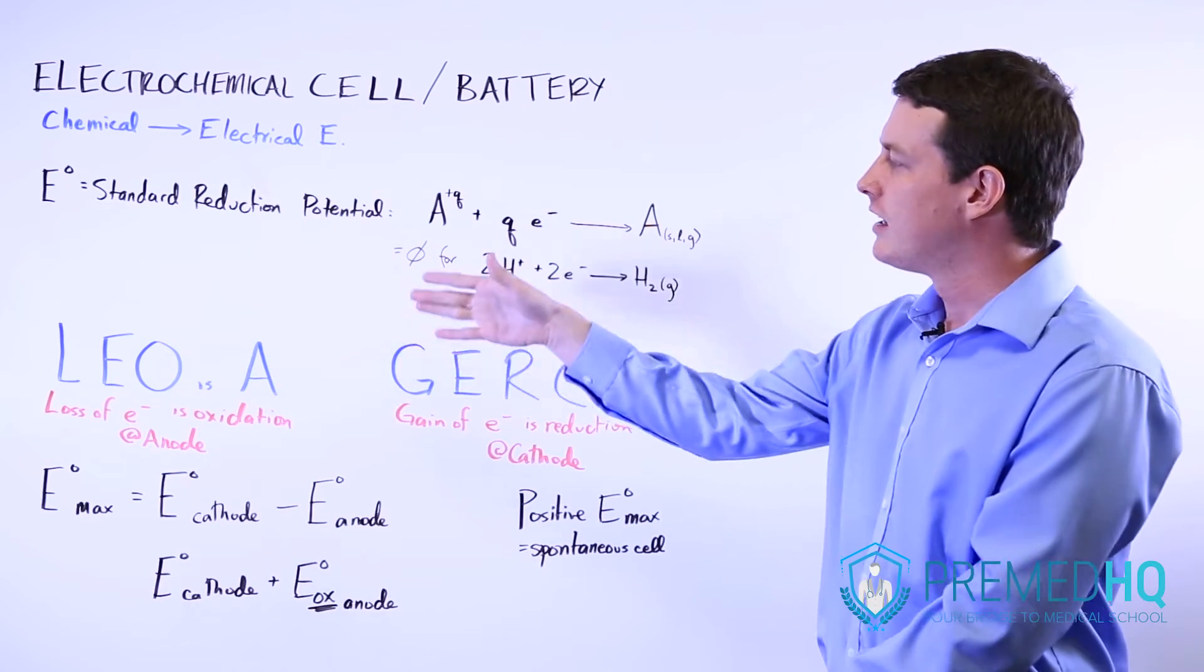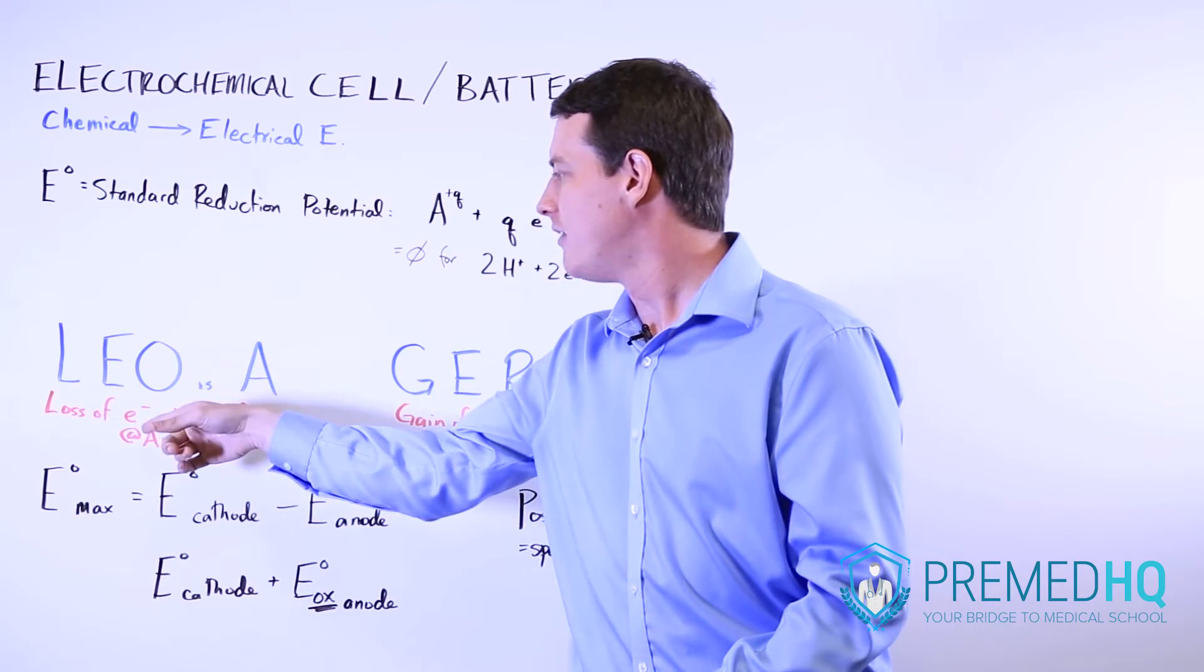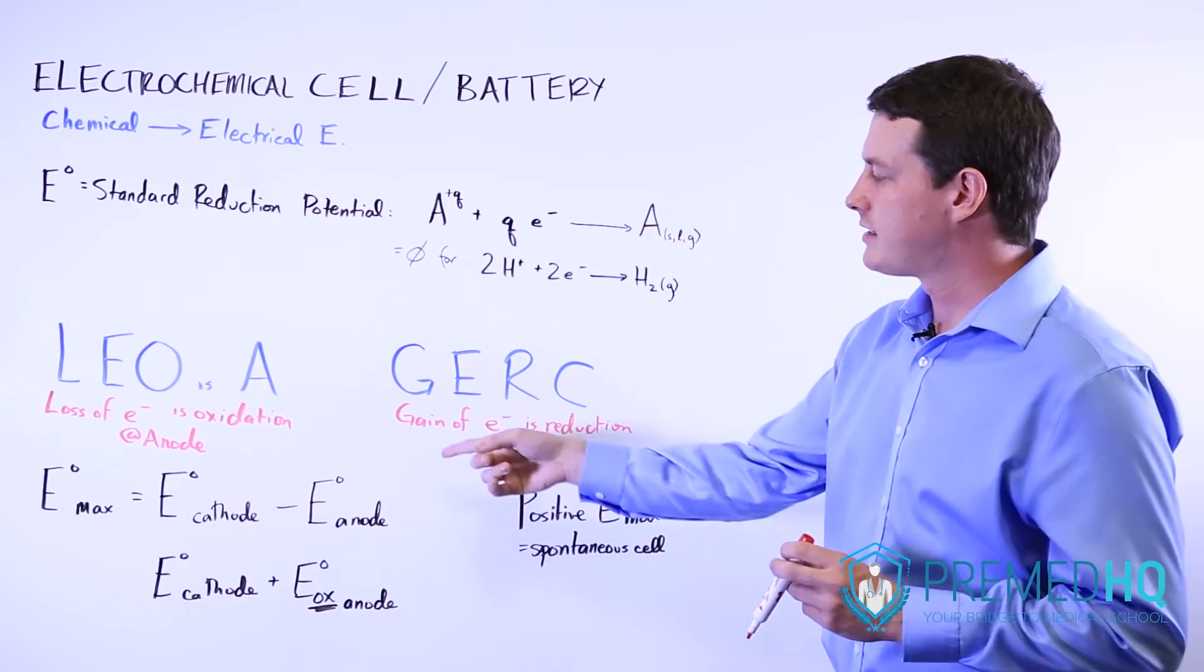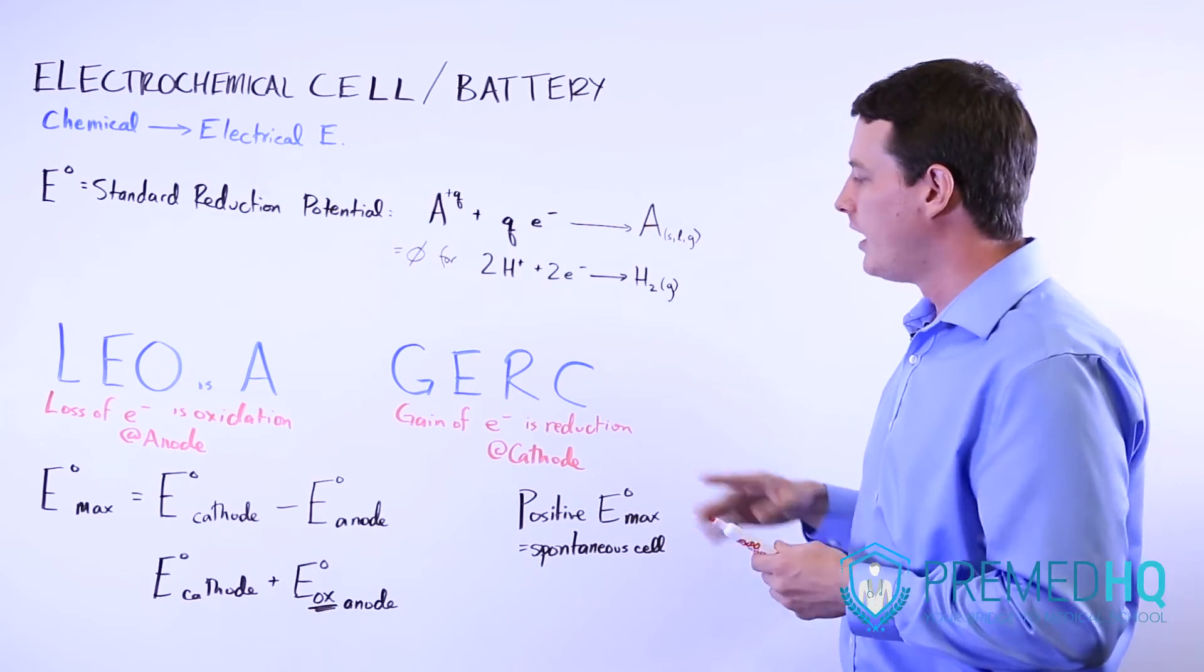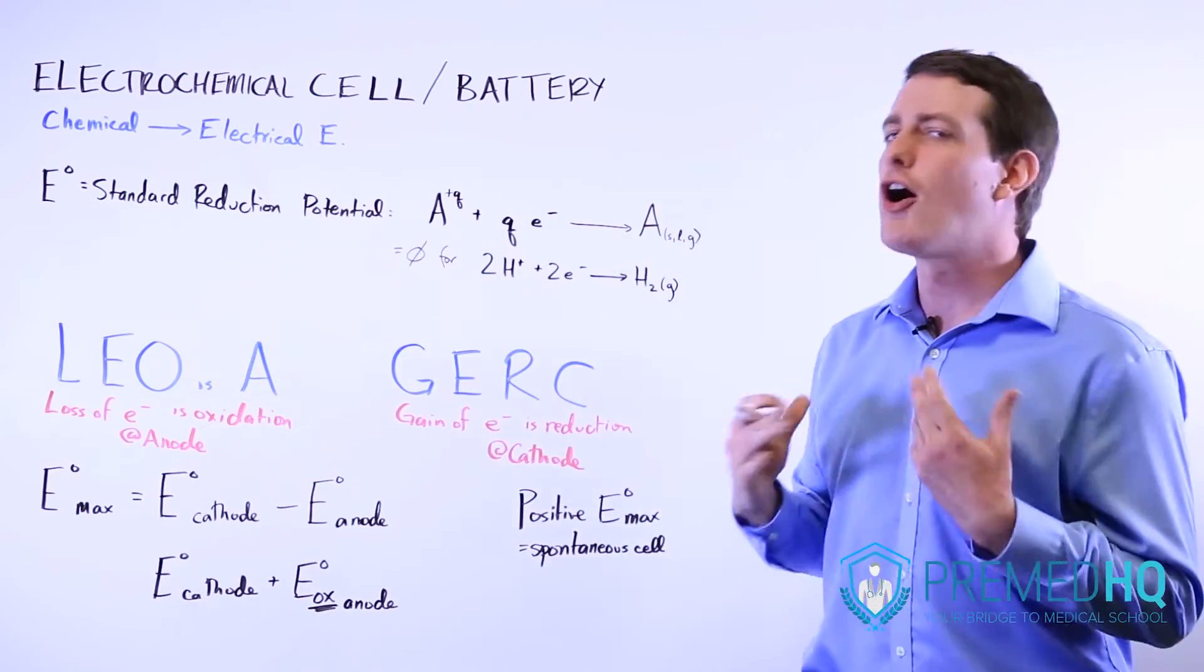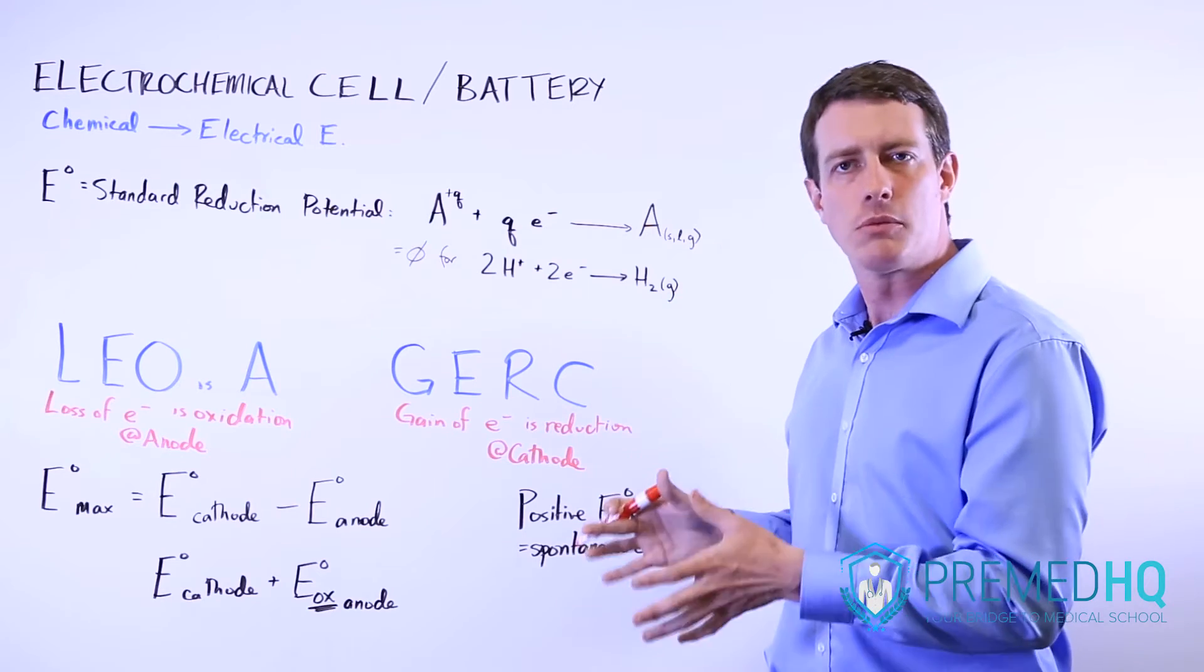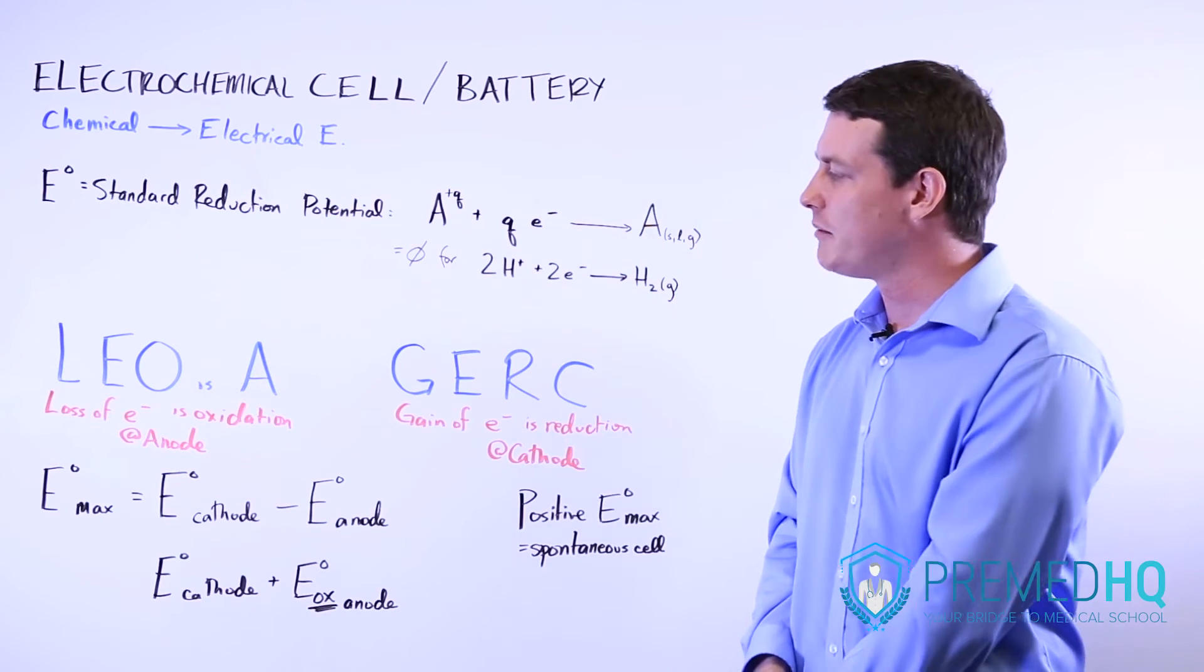So what we've come up with here is Leo is a jerk. Leo, as you already know, stands for loss of electrons is oxidation. And the A is because this occurs at the anode. GERC stands for gain of electrons is reduction, which is something you might be quite familiar with. And remember that this occurs at the cathode. So just remember Leo is a jerk is a far better way of remembering it than Leo the lion goes ger and red cat and ox. And it will simplify your life when you're going through a problem like this on the MCAT. Leo is a jerk. Remember that sentence because it will help you out.